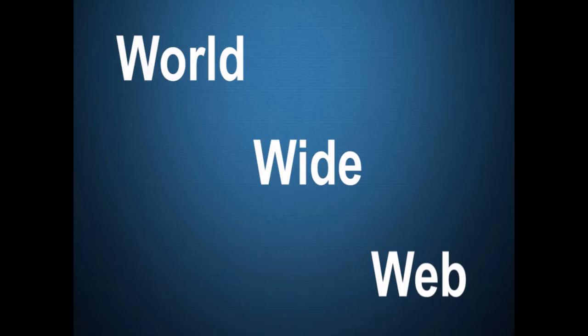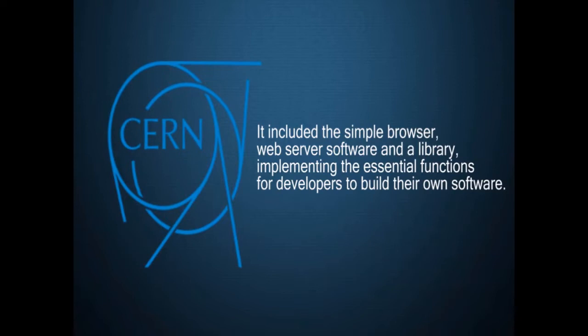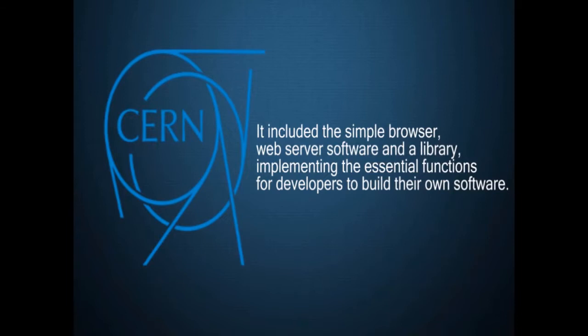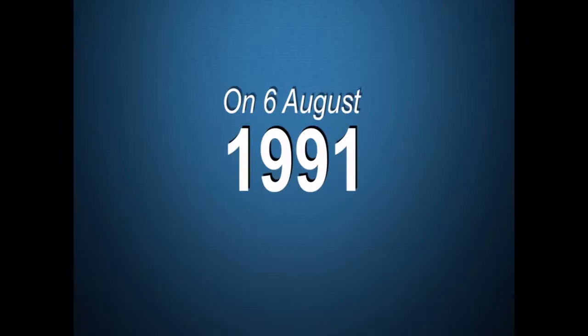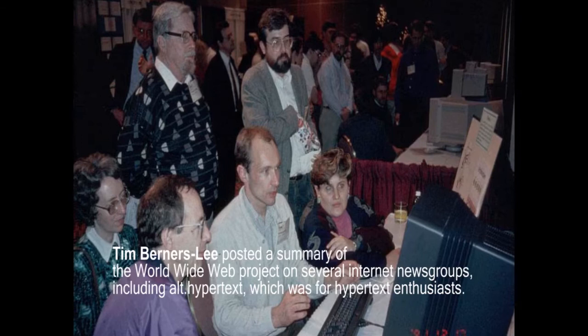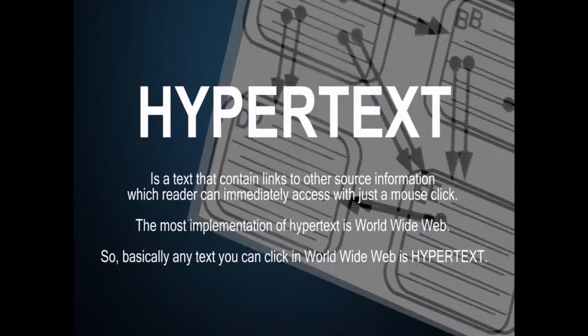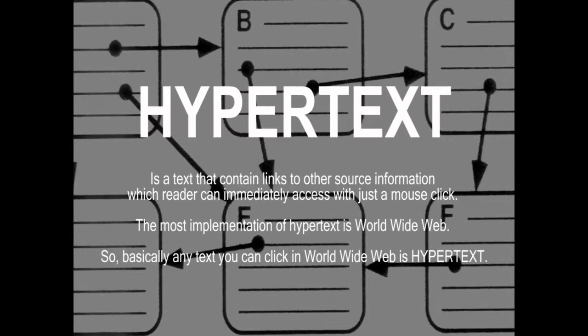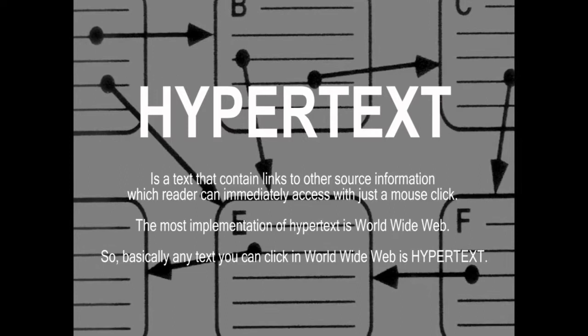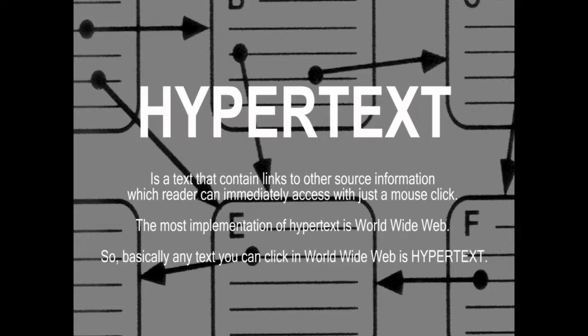In 1991, an early World Wide Web system was released to the high-energy physics community via the CERN program library. It included the simple browser, web server software, and a library implementing the essential functions for developers to build their own software. On August 6, 1991, Tim Berners-Lee posted a summary of the World Wide Web project on several internet newsgroups, including alt.hypertext, which was for hypertext enthusiasts. Hypertext is text that contains links to other source information which a reader can immediately access with just a mouse click — the most common implementation of hypertext is the World Wide Web. Basically, any text you can click on in the World Wide Web is hypertext.